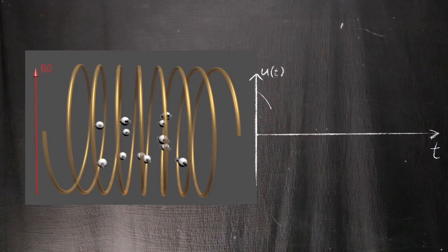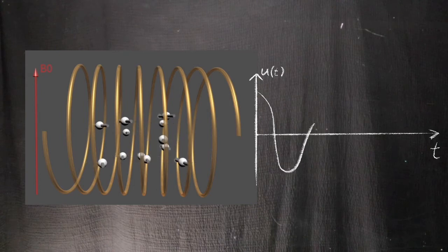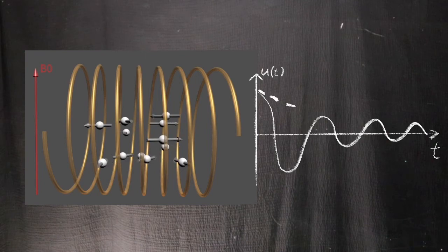And right after, we can receive the signal as an induced voltage in the same coil. The signal oscillates with the same frequency as the spins. And also there is a decay there.